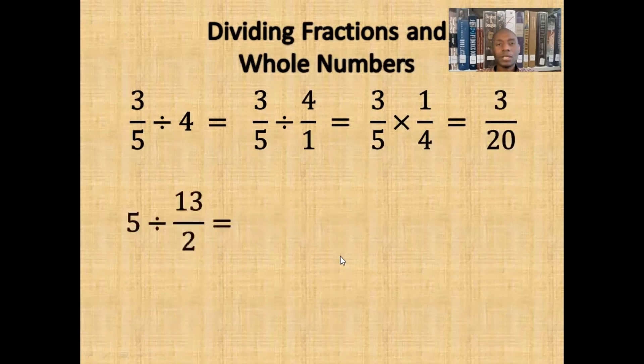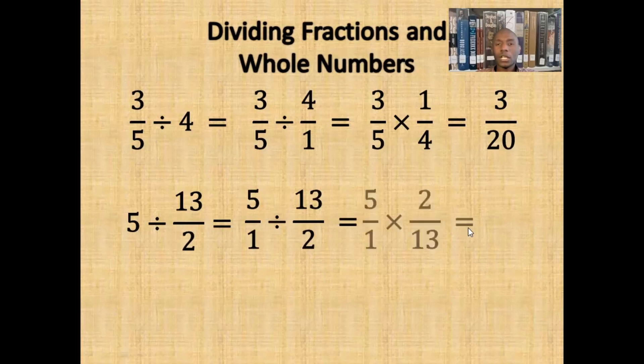Now suppose we have 5 divided by 13 halves. Once again, we would turn 5 into a fraction by putting it over 1. So it becomes 5 wholes divided by 13 halves. If we use keep change flip, this turns into 5 wholes times 2 thirteenths. And if we multiply the fractions together, we get 10 thirteenths.